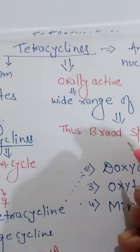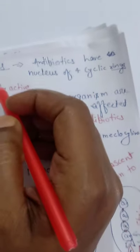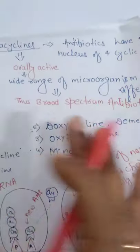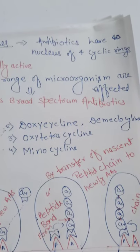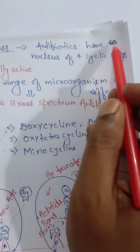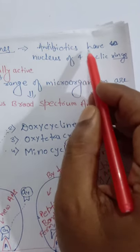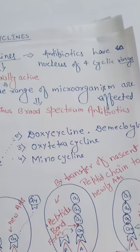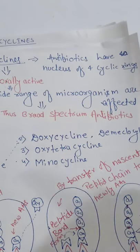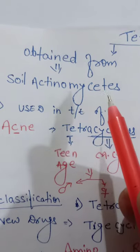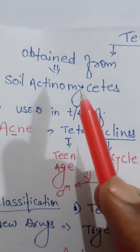Tetracycline is a broad spectrum antibiotic. Why is it called 'tetra'? These antibiotics have a nucleus of 4 fused cyclic rings — that's why it is called tetracycline. Tetracycline is obtained from the soil actinomycetes.